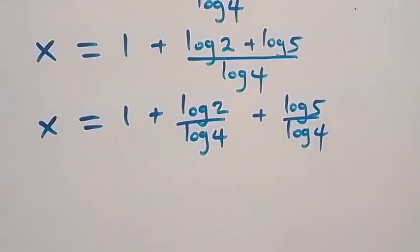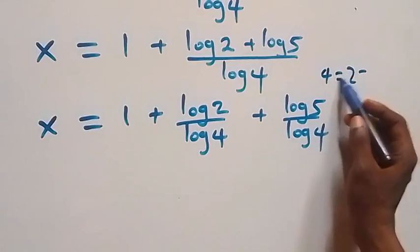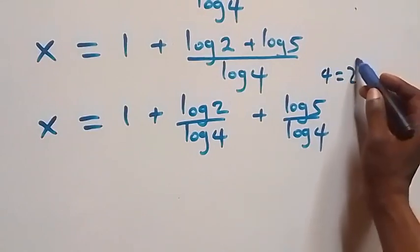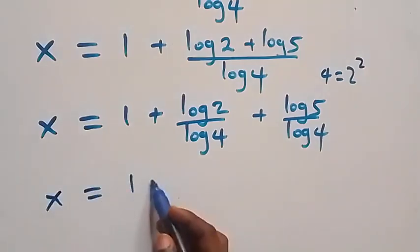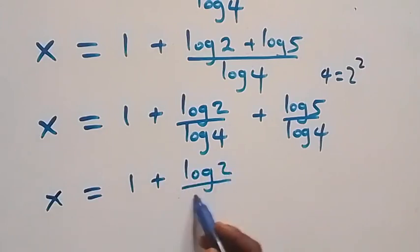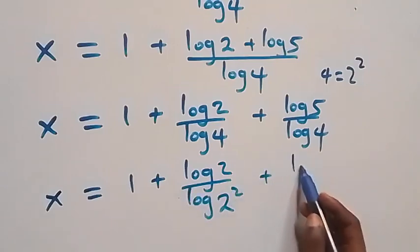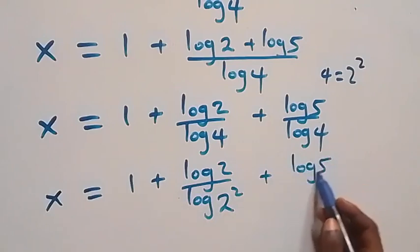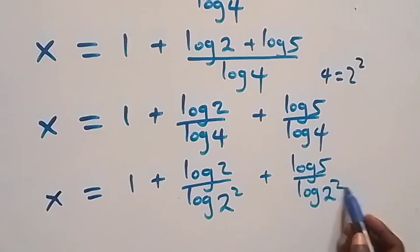Here, 4 can be written as 2 times 2, which is the same as 2 squared. So x equals 1 plus log 2 over log(2 squared), plus log 5 over log(2 squared).